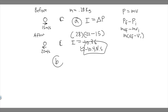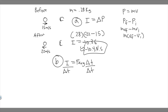Now let's move on to Part B. We're trying to find the magnitude of the average force. The formula you need to know is that impulse I equals the average force multiplied by the change in time, which is essentially the contact time. Solving for F average, we divide both sides by the change in time: F average equals impulse divided by contact time. The contact time is 0.06 seconds, so it's equal to −10.4 divided by 0.06.